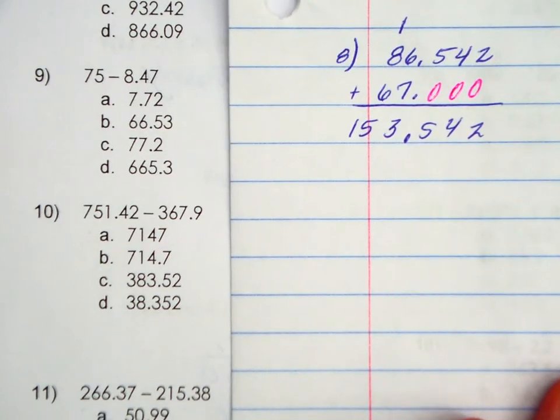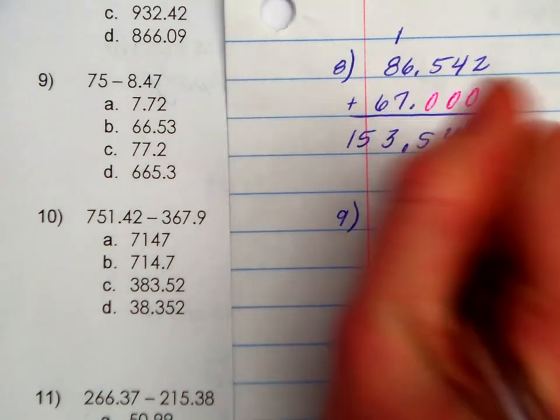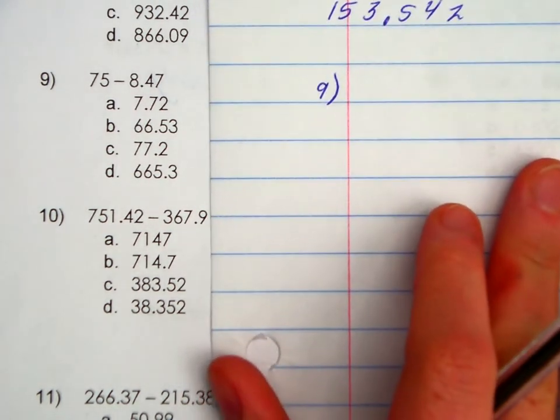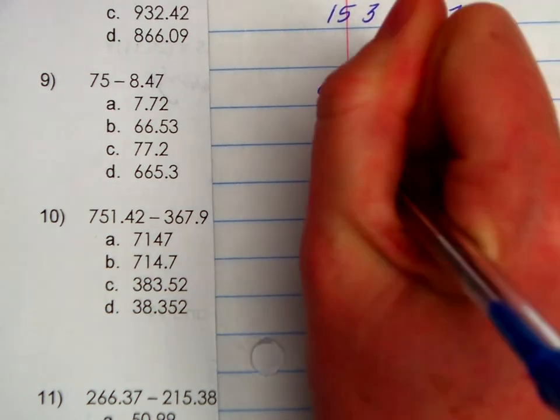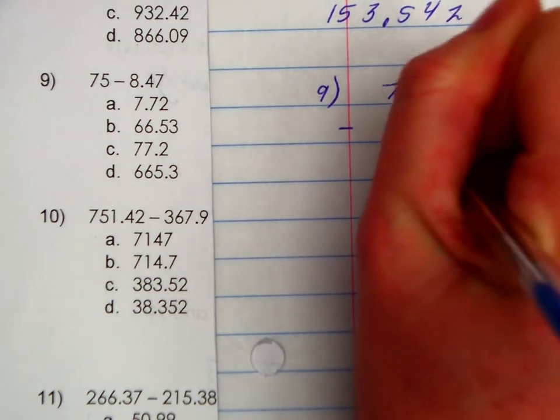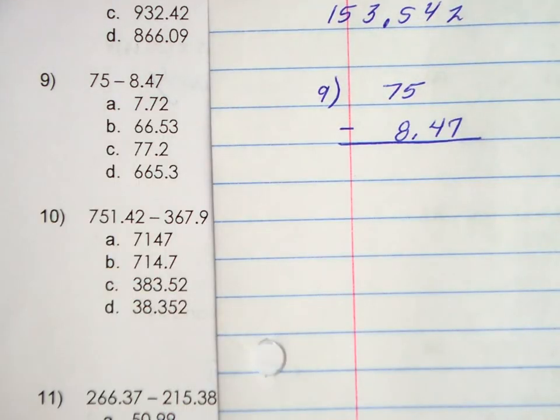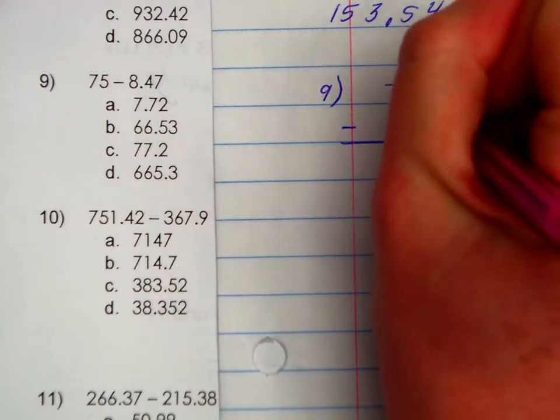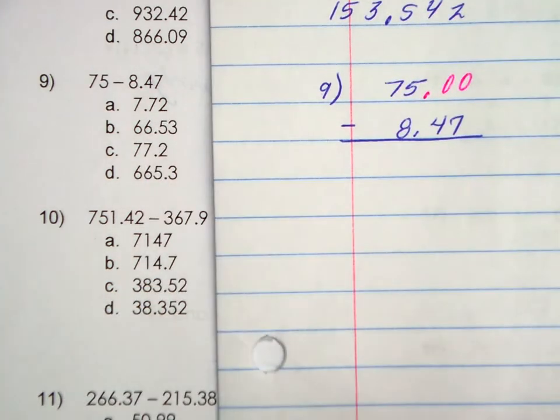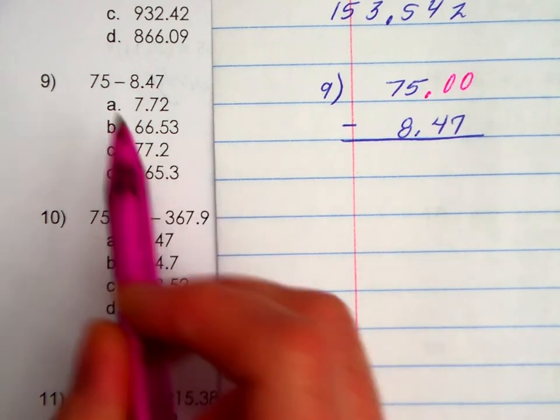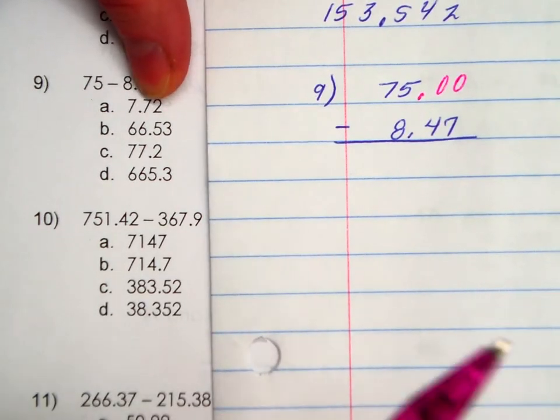Subtraction. You're still going to stack your decimals. Be careful with your borrowing. We all make that mistake, even adults. So I'm going to line this up. We've got 75, and we're going to take away 8 and 47 hundredths. At this point, I have no choice but to put placeholders. Now, I could use some test-taking strategies here and see who could I eliminate. If I have 75 take away just 8, just look at 75 take away 8, could it be 600?